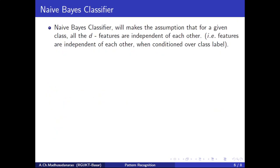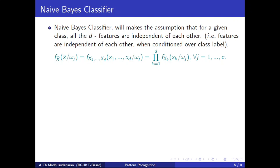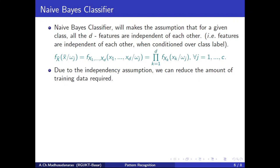This is what the Naive Bayes classifier exploits. It assumes that all features are independent of each other. If they are independent, we need to estimate very few parameters, which requires less training data. The Naive Bayes classifier assumes that for a given class, all d features are independent of each other when conditioned on the class label. So f(x-bar | omega j) equals the product of marginal PDFs — due to the independence assumption, we can reduce the amount of training data required.